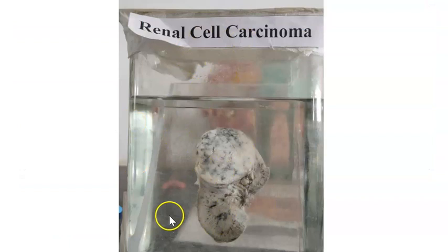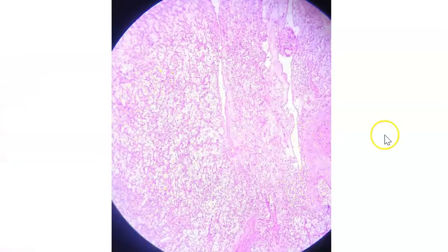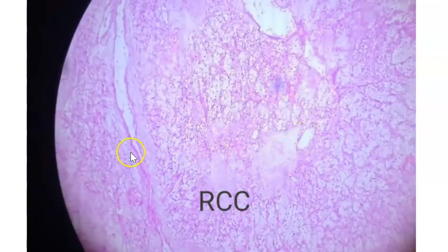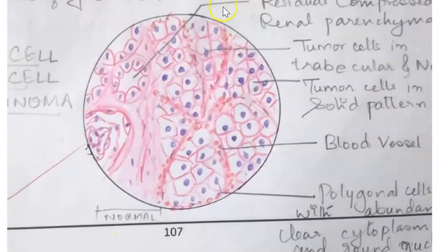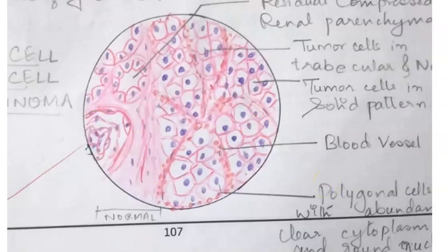Looking at the clear cell type of renal cell carcinoma in the pathology image: on one side you have the glomerulus with compressed renal parenchyma, and on the other side are the tumor cells arranged in a solid pattern - polygonal cells with abundant clear cytoplasm and round nuclei.